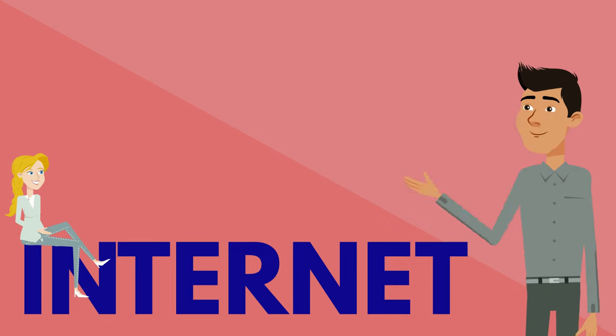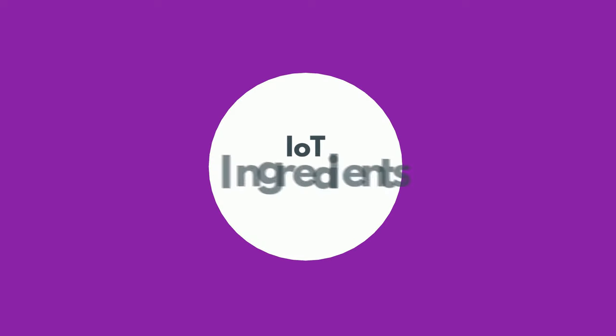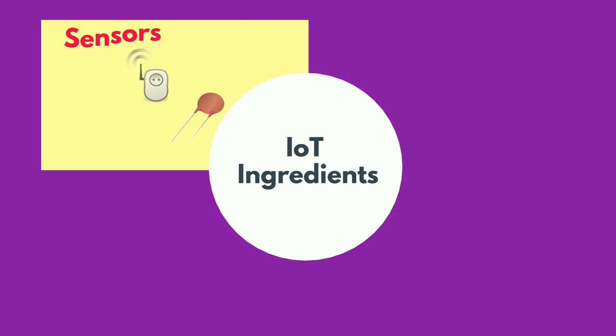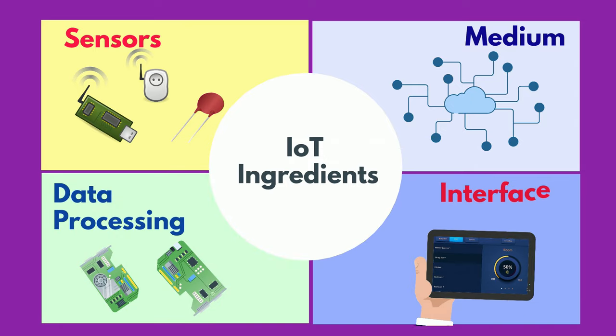Great question. It's basically a cocktail of four ingredients, each of which have their own specific role. They are sensors, medium of exchange, data processing, and the user interface. Pretty simple, right?